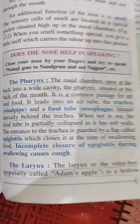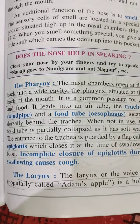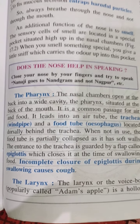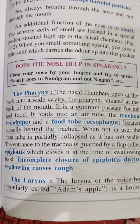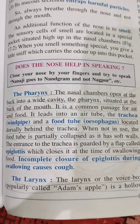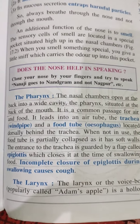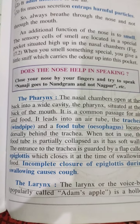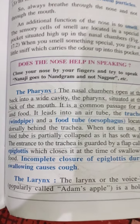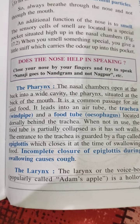The next part is the pharynx. The nasal chambers open at the back into a wide cavity called the pharynx, situated at the back of the mouth. It is a common passage for air and food, leading into an air tube called the trachea and a food tube called the esophagus, located dorsally behind the trachea. The entrance to the trachea is guarded by a flap called the epiglottis, which closes at the time of swallowing food. Incomplete closure of the epiglottis during swallowing causes cough.